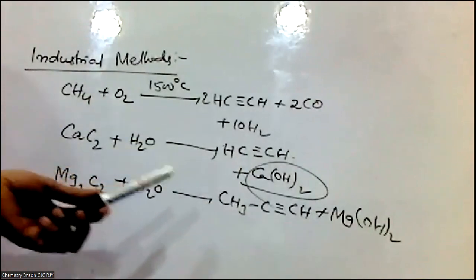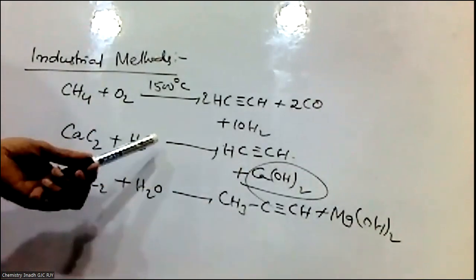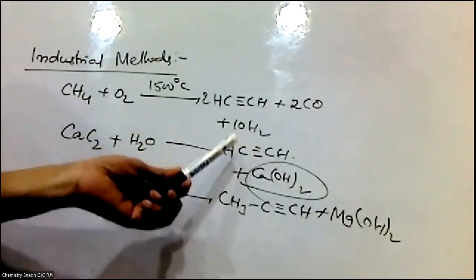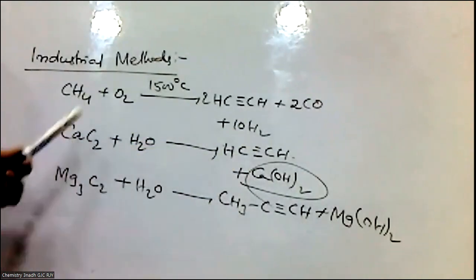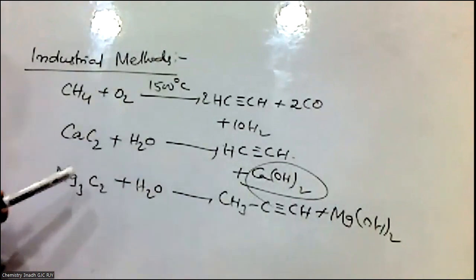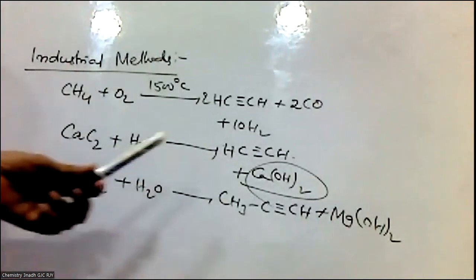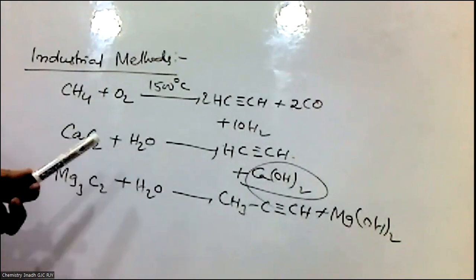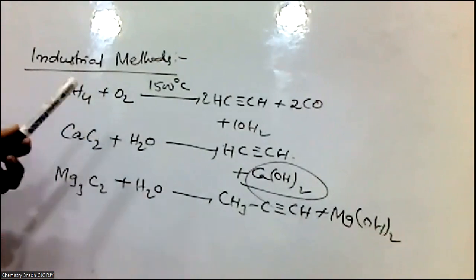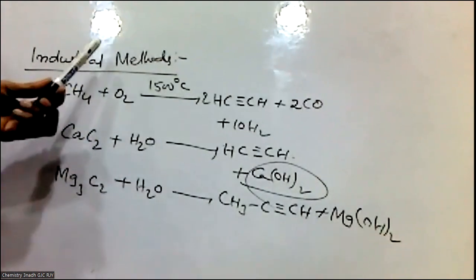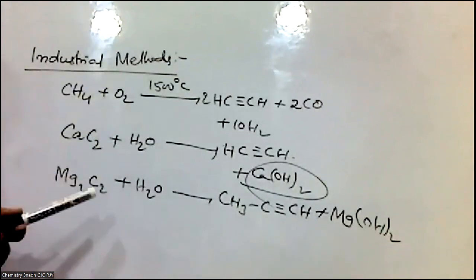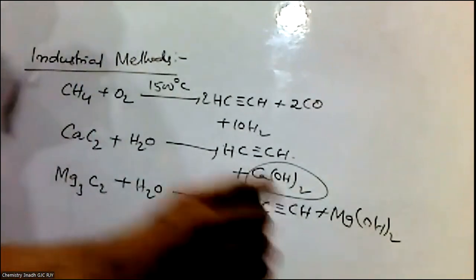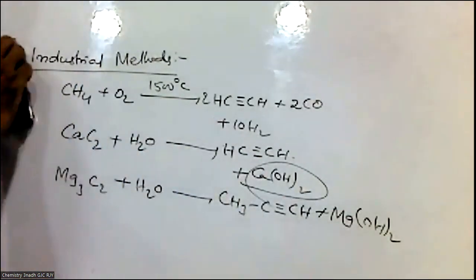Acetylene can be prepared by the hydrolysis of calcium carbide. Propyne can be prepared by the hydrolysis of magnesium carbide. These are the industrial methods for the preparation of acetylene and propyne.